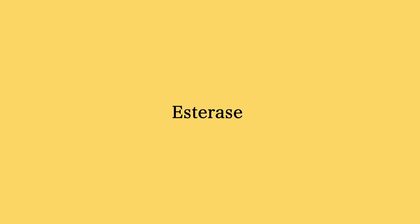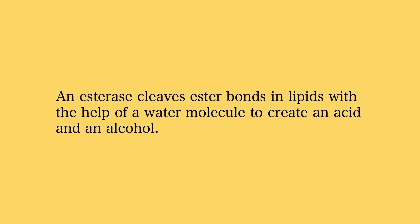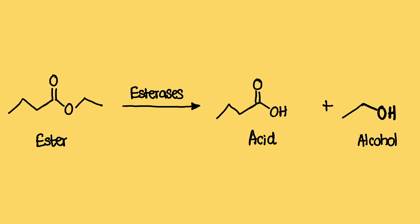Another group of hydrolases you will come across are esterases. Esterases cleave an ester bond in lipids with the help of a water molecule to create an acid and an alcohol. In this example, you can see that the ester bond, which is part of a lipid molecule, is broken down to create an acid — in this case a carboxylic acid — and an alcohol.